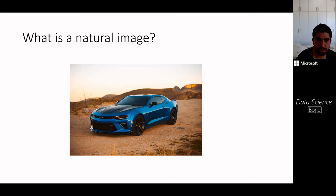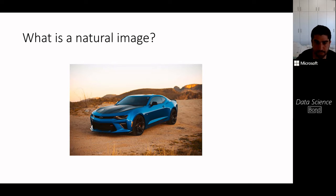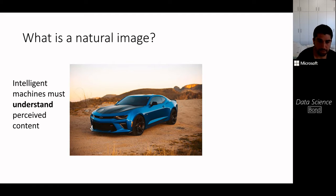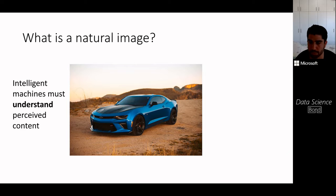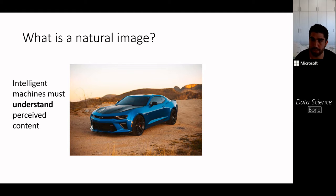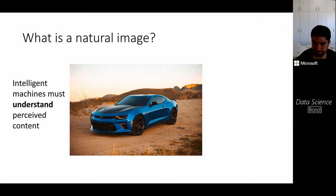If we want to build intelligent machines, we want to be able to understand all of these properties, particularly the semantic ones. One way to demonstrate this is by showing that an AI can manipulate or create these different properties in images and videos. There's a famous quote by Richard Feynman: 'What I cannot create, I do not understand.' So the ability to create and manipulate is tightly related to understanding.